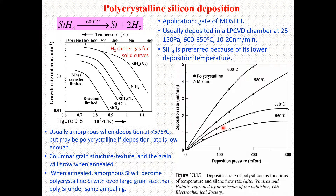We can also have columnar grain structures, and the grains will grow when annealed. When we anneal amorphous silicon at a higher temperature, it will become polycrystalline with even larger grain size. We can convert amorphous silicon into polycrystalline by annealing, but note that the grain size may be larger than that of polycrystalline silicon under the same annealing conditions.